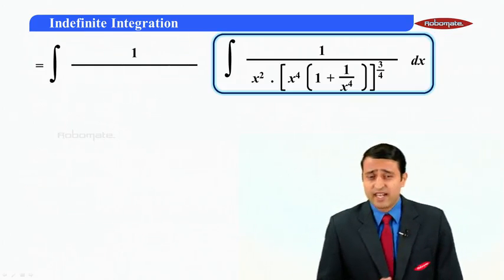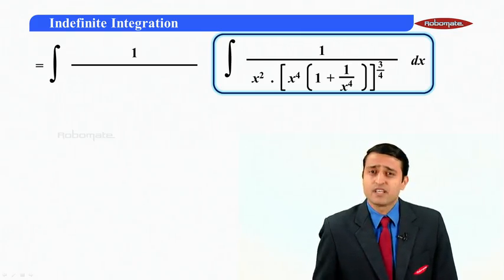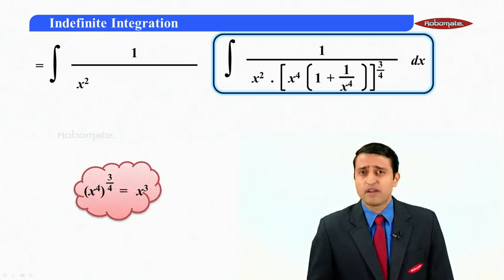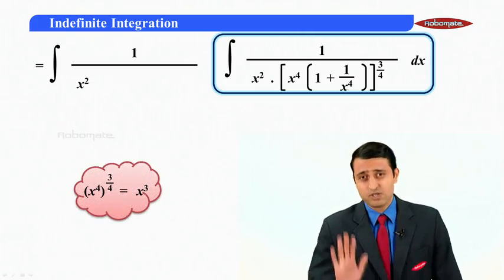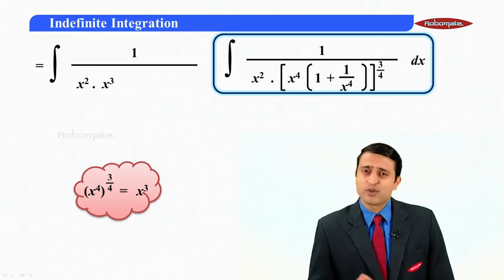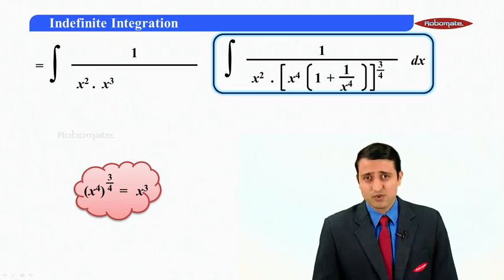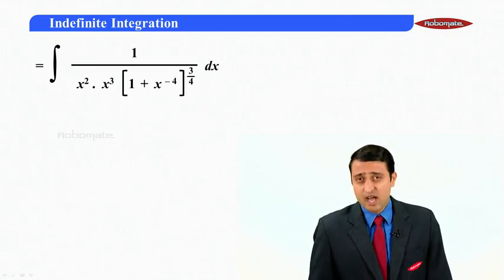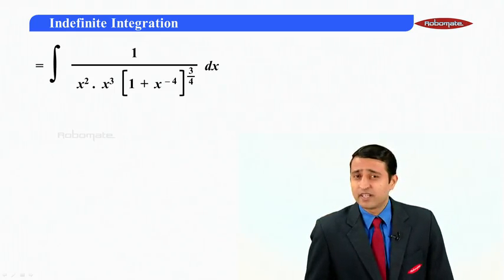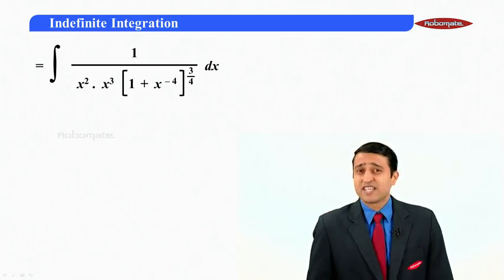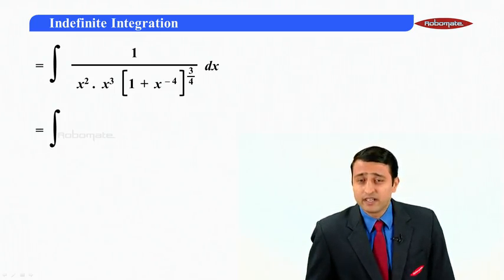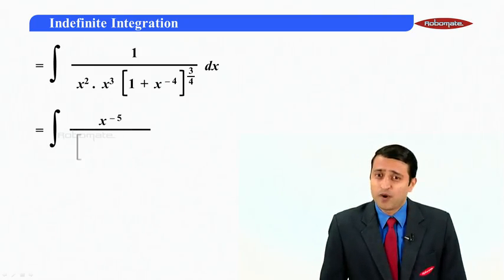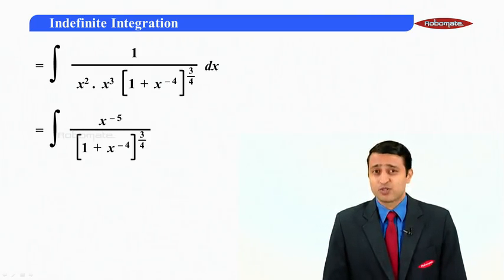Now we need to simplify this. x square will be as it is. Now my students x raise to 4 then raise to 3 by 4. Can I say it is x cube? So let me write here x cube. 1 upon x raise to 4 can I say is x raise to minus 4. So we will have 1 plus x raise to minus 4 the whole raise to 3 by 4 dx. Now x square into x cube in the denominator multiplied. So can I say it is x raise to 5 which if I shift to the numerator is x raise to minus 5.